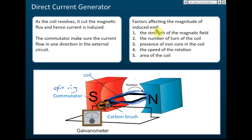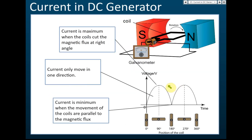Fourth, the speed of rotation — if you rotate faster, a higher EMF is produced. Fifth, the area of the coil — the bigger the area of the coil, the higher the EMF produced. So those are the factors affecting the magnitude of the induced EMF.